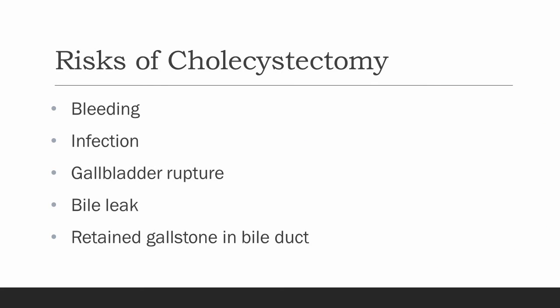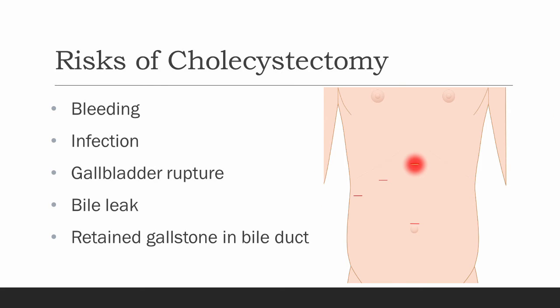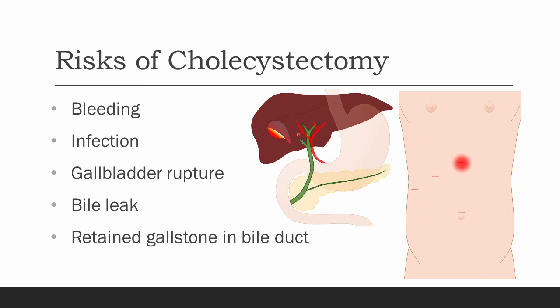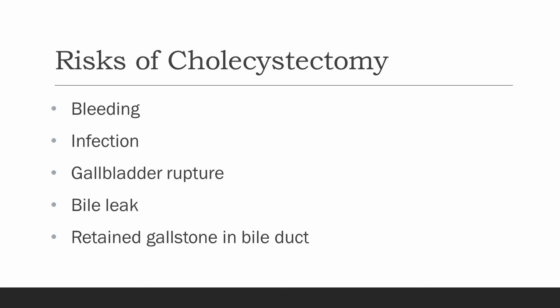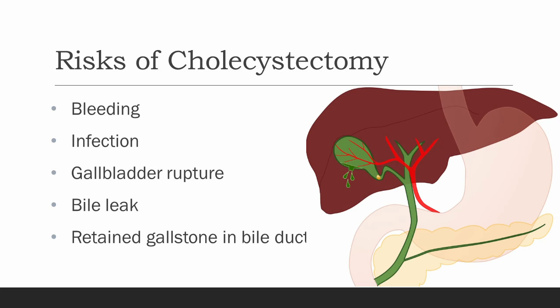Infection may occur in the abdomen, in the surgical incisions, or in other parts of the body. We may give you a dose of IV antibiotics right before surgery to help decrease this risk, but even with an uncomplicated cholecystectomy, infection may still occur. It is not uncommon for the gallbladder to rupture in the process of removing it. This can cause spillage of bile and/or gallstones, which increases the risk of infection after surgery. When this occurs, we retrieve as many stones as possible and wash out the abdomen to clean out any spilled bile.